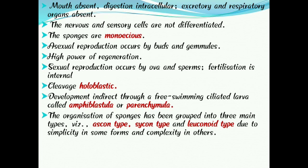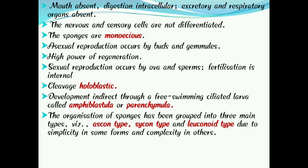Porifera possesses a high power of regeneration — any piece or part of the body of Porifera is capable of growing into a complete sponge. Sexual reproduction occurs by ova and sperms, where fertilization is internal, meaning the fusion of ova and sperm takes place within the body. The cleavage is holoblastic, meaning there is complete division of the egg.